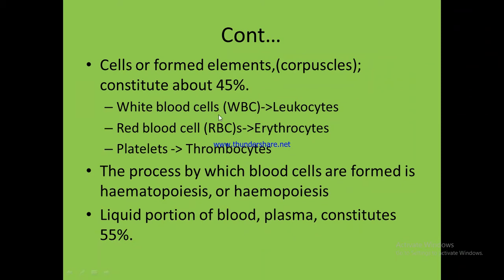By the way, blood cells are formed in the womb after conception, within 14 to 20 days, by the process of hematopoiesis or hemopoiesis. This means hematopoiesis is the process of blood cell formation. The liquid portion of blood comprises or constitutes 55 percent of blood volume.